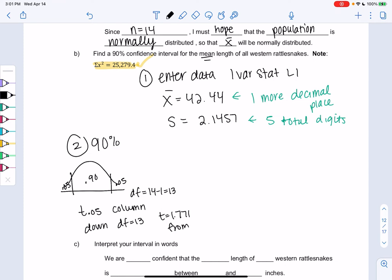And you should see a T value of 1.771. So I'm getting this from the table. Alright, and then we just plug into the formula. So if you feel like maybe you can do this, go for it. It'll be x bar plus or minus T times s over square root n.